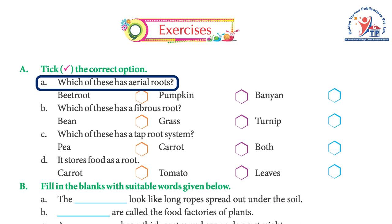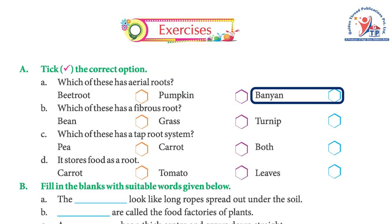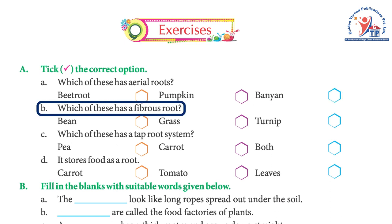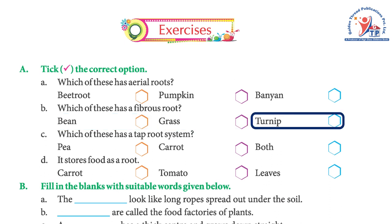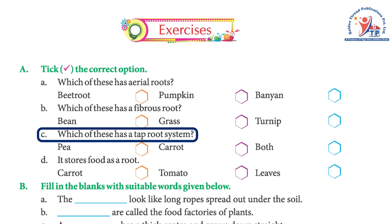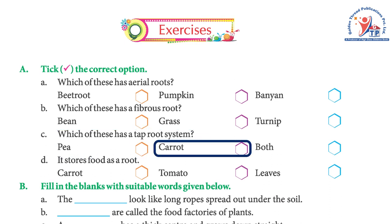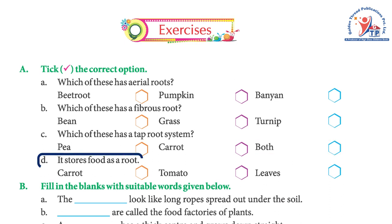Exercise A — Choose the correct option. a) Which of these has aerial roots? Answer: Banyan. b) Which of these has a fibrous root? Answer: Grass. c) Which of these has a taproot system? Answer: Both carrot and pea. d) Which of these stores food as a root? Answer: Carrot.